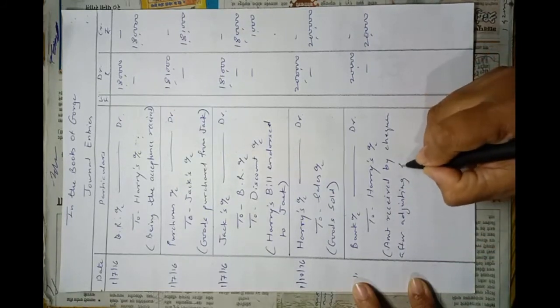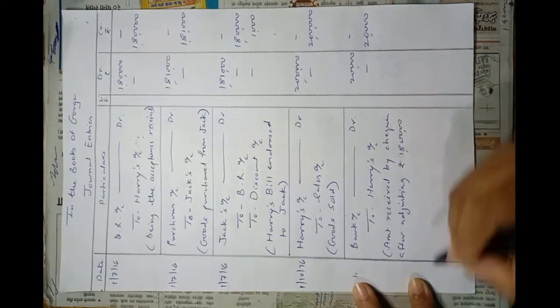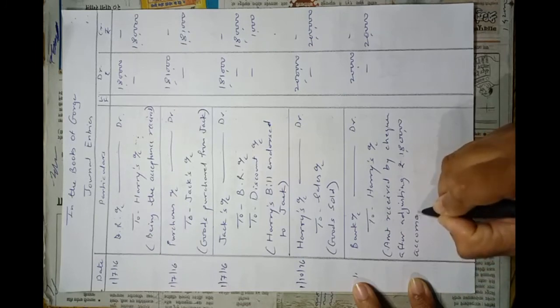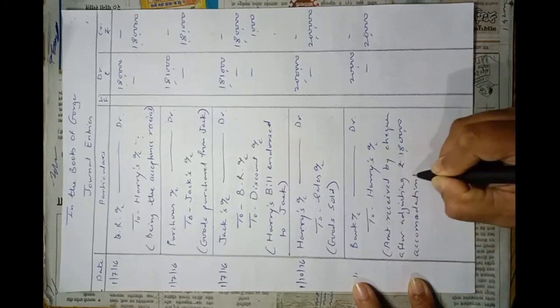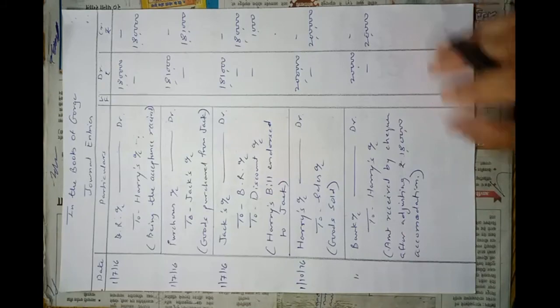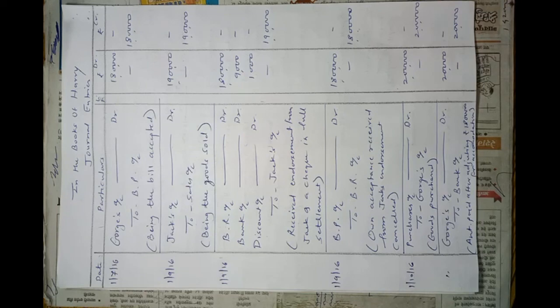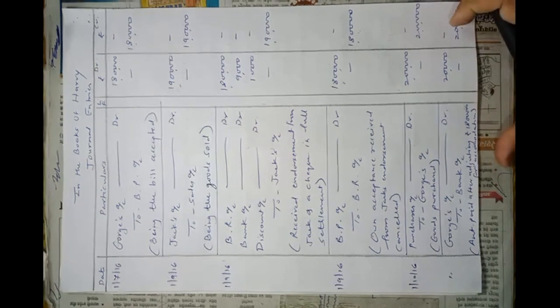Narration: Amount received by cheque after adjusting Rs. 1,80,000 for accommodation. In this way we have solved this problem. You have to practice these types of problems. From the next period we will start Average Due Date. If there is any doubt, you can ask. That's all.